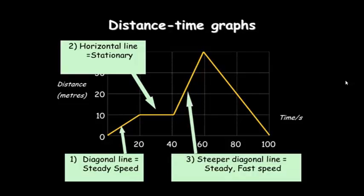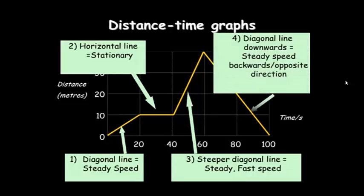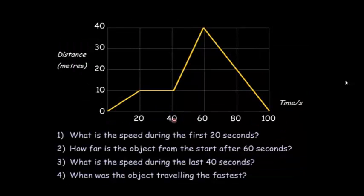And then this next section here, you'll see the line is steeper, much, much steeper than the first line. So it means it's a much faster speed. And this last one, the diagonal line backwards, means that it's going at a steady speed still because it's a straight line, but it goes back to zero, so it returns back to its original position.